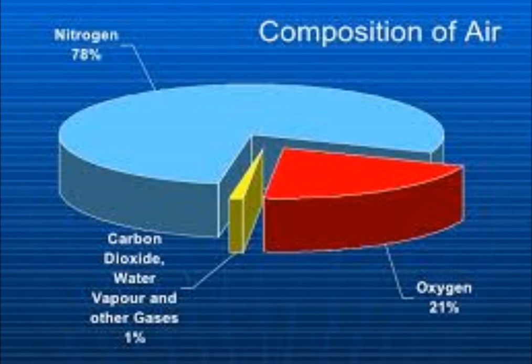A layer of carbon dioxide in the atmosphere acts as a shield, preventing heat from leaving the Earth. It is also used by plants to make their food.